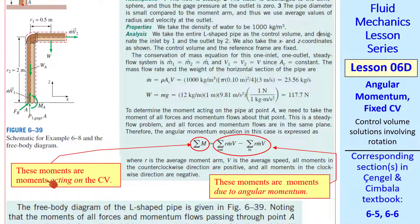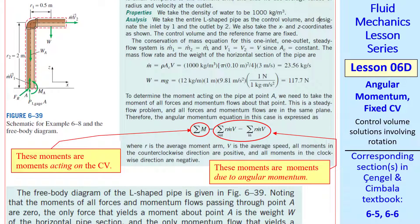This sigma m term on the left represents moments acting on the control volume. That would include moments caused by this weight, for example. The terms on the right are moments due to angular momentum. Probably the most difficult part of these kinds of problems is getting the signs correct. At an outlet, for example, here, the outflow of angular momentum is in the clockwise direction. And keep in mind our convention that counterclockwise moments are positive. For our problem, the left-hand side becomes MA minus R1 times the weight, with the negative sign included because this moment caused by the weight about point A is clockwise.